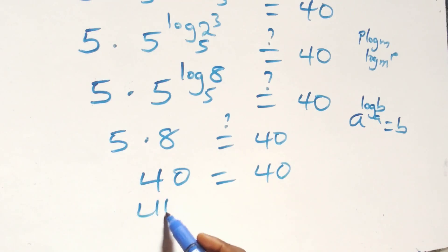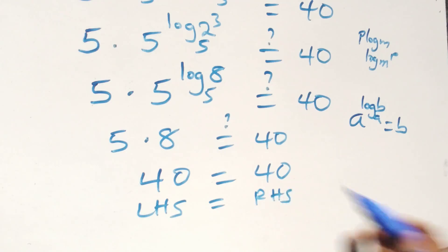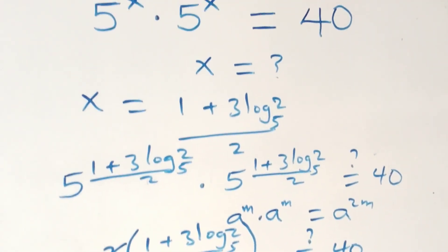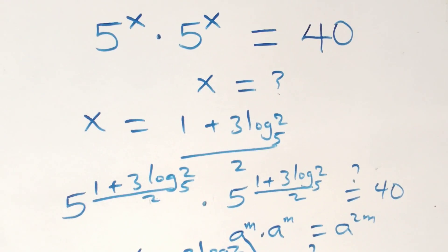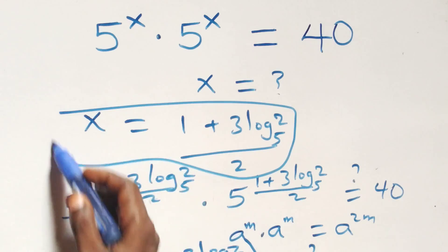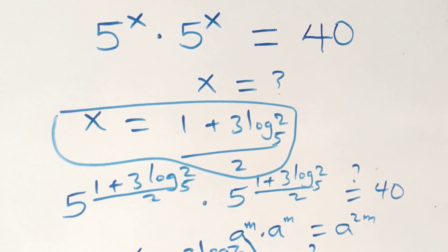Left hand side equals the right hand side, and therefore we conclude that x equals (1 + 3·log₅2) all over 2 satisfies this given problem. Thank you for watching. Don't forget the steps — subscribe for more videos and turn on notifications. Share this video, give it a thumbs up, and put your comment. See you next class, bye for now.